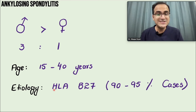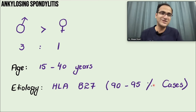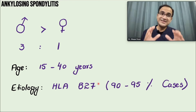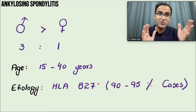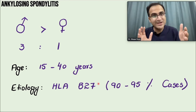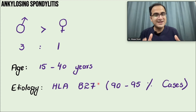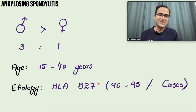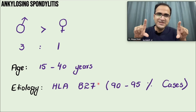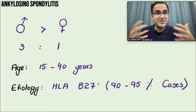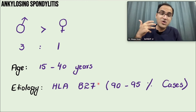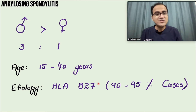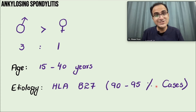The etiology involves HLA-B27, which is positive in 90 to 95 percent of cases. All the seronegative arthropathies - psoriatic arthritis, reactive arthritis, and ankylosing spondylitis - share this common HLA-B27 gene, yet they are seronegative and do not appear as positive on antibody tests.